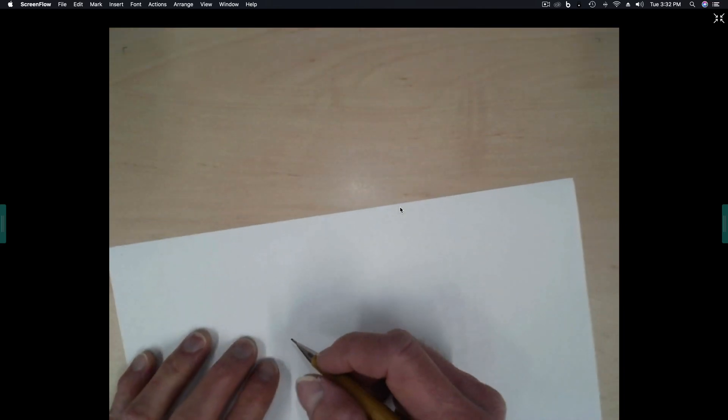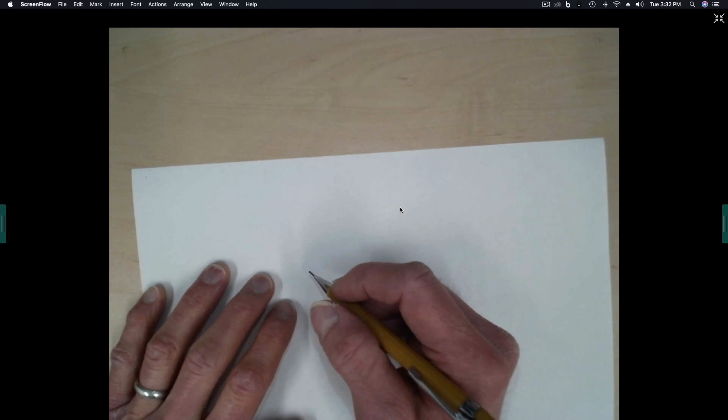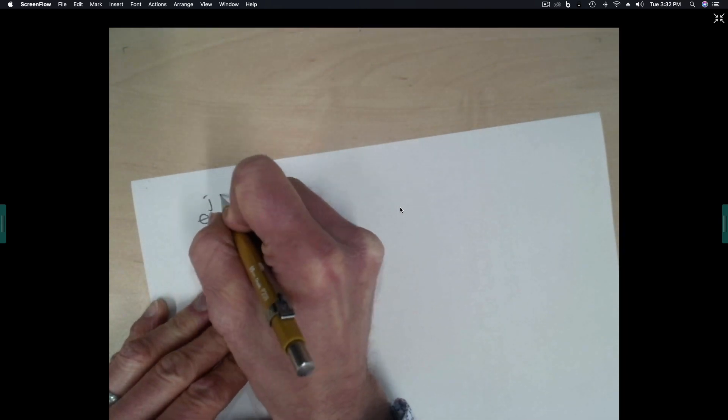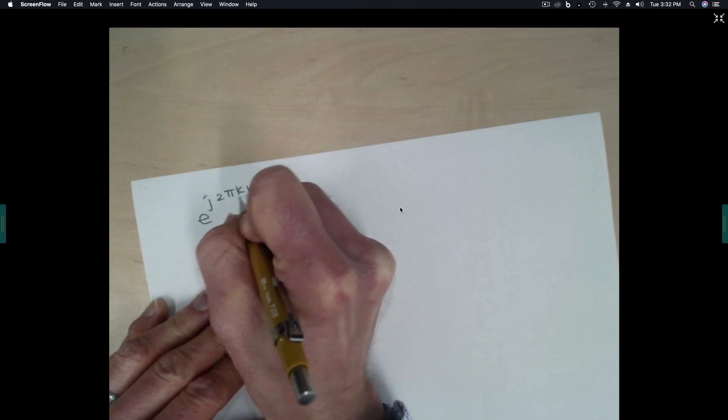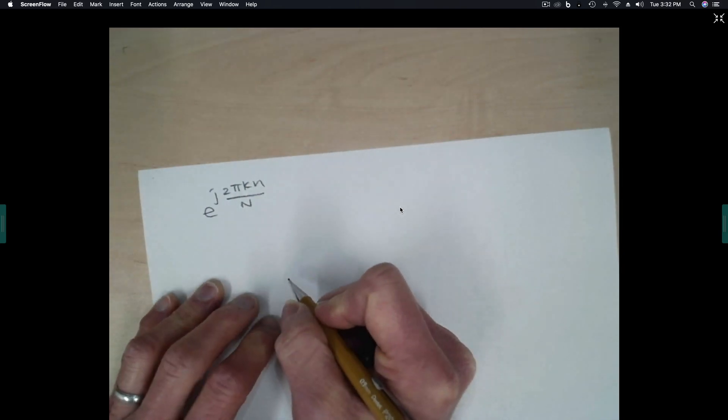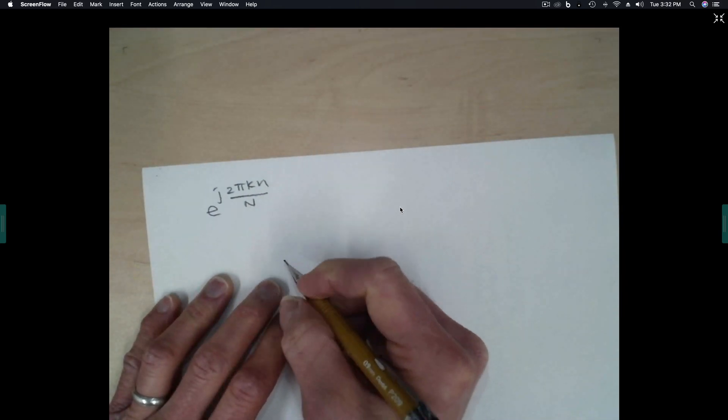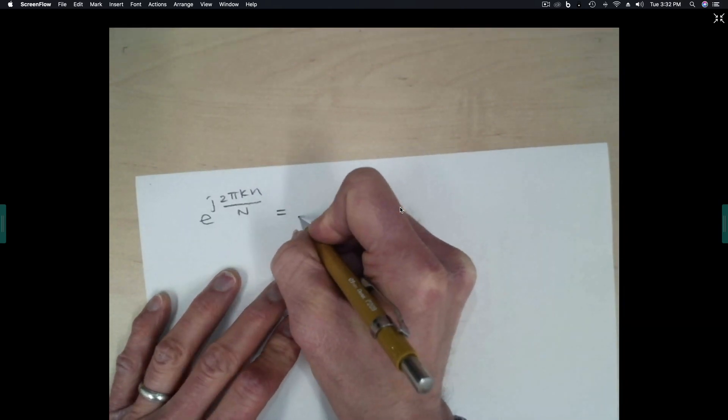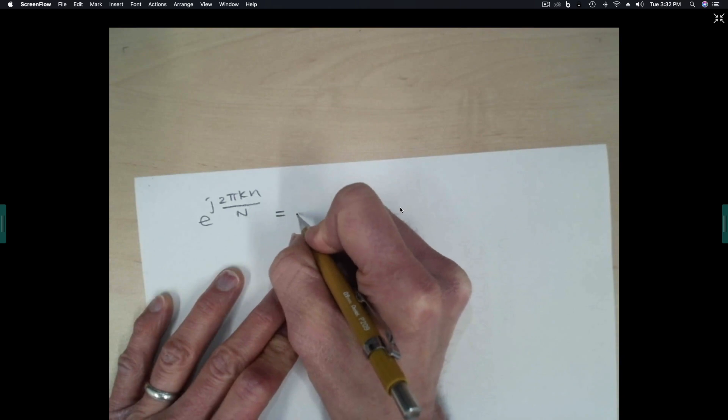In this video, we're going to look at some properties of the discrete time complex exponential. In particular, this one. And the thing that I want to point out is that this is periodic in both k and little n.